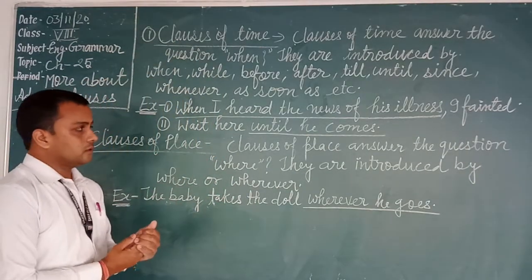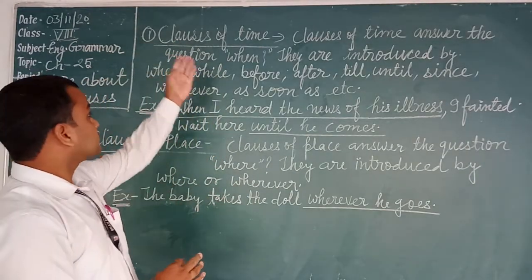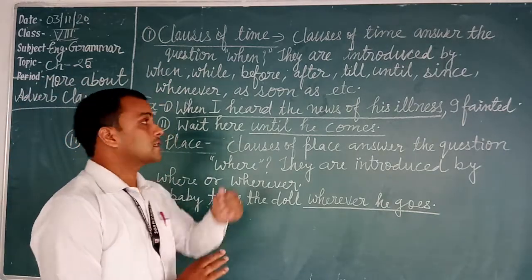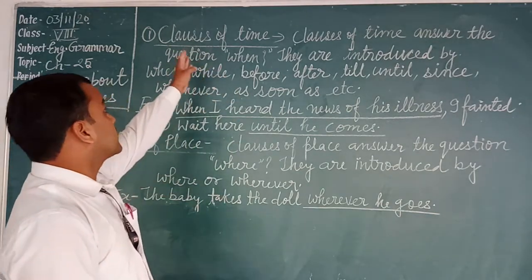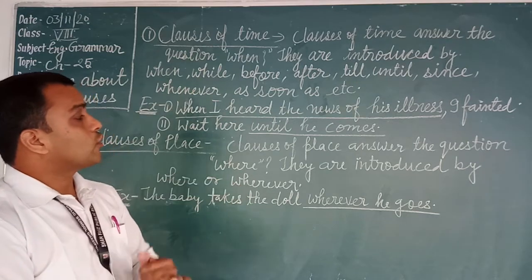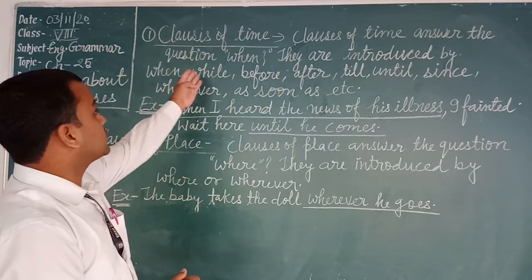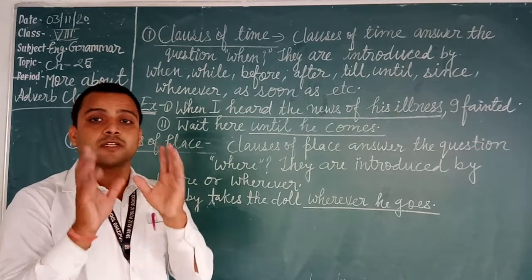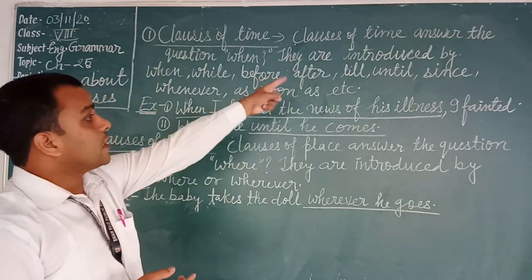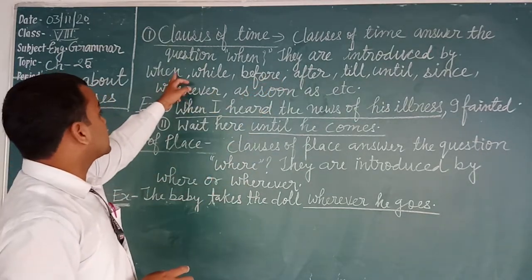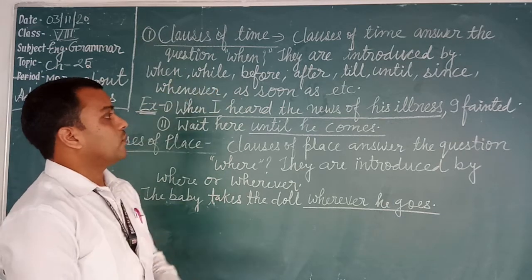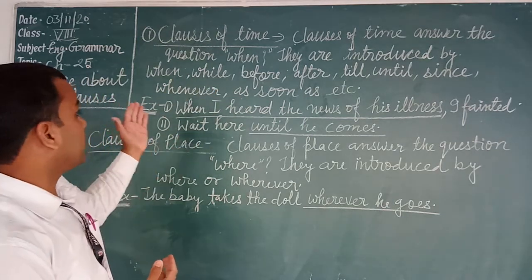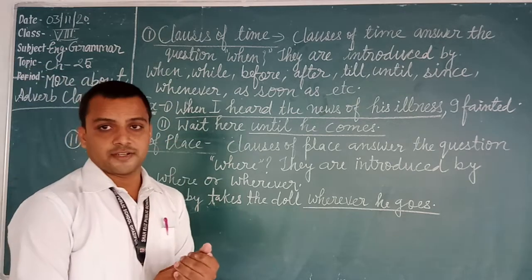Now let's learn more about all these kinds of Adverb clauses. First: clauses of time. A clause of time answers the question 'when.' They are introduced by conjunctions like: when, while, before, after, till, until, since, whenever, as soon as, and as.